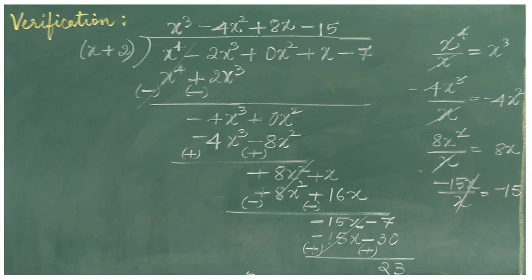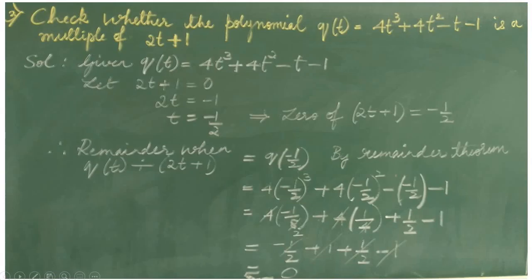Now we know how to find the remainder by using remainder theorem and to verify by actual division. Now, let's solve some problems related to remainder theorem. Check whether the polynomial q of t equal to 4t cube plus 4t square minus t minus 1 is a multiple of 2t plus 1.